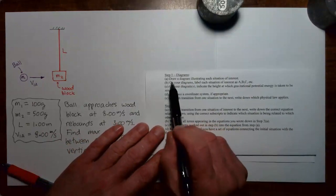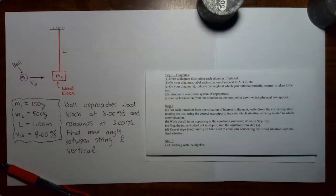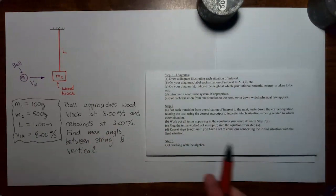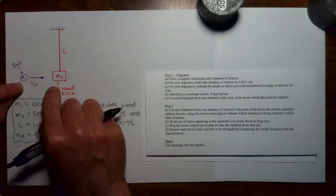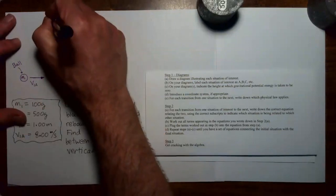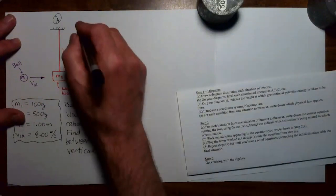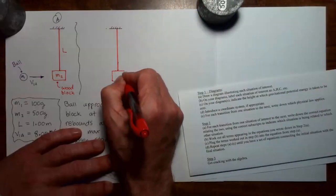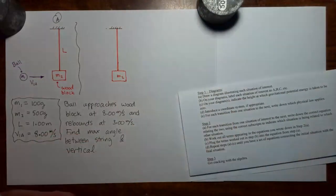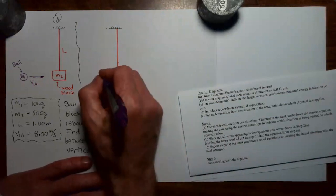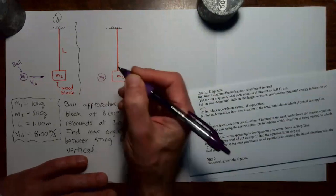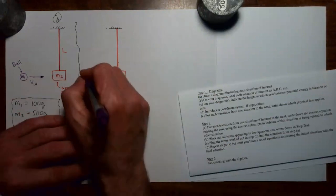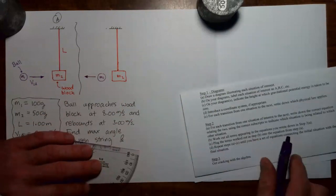Step 1A is to draw a diagram illustrating each situation of interest. Anytime we have a collision, we draw one moment of interest right before the collision and one moment of interest right after the collision. This picture illustrates right before the collision — let's call that moment of interest A. Let's put in another figure to represent what's going on right after the collision. Let's call this situation B.